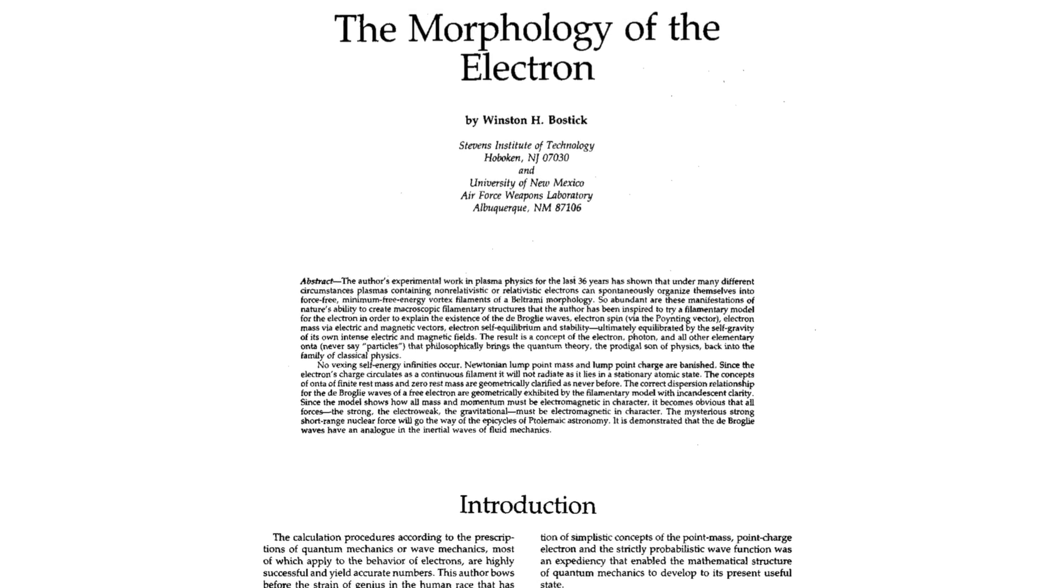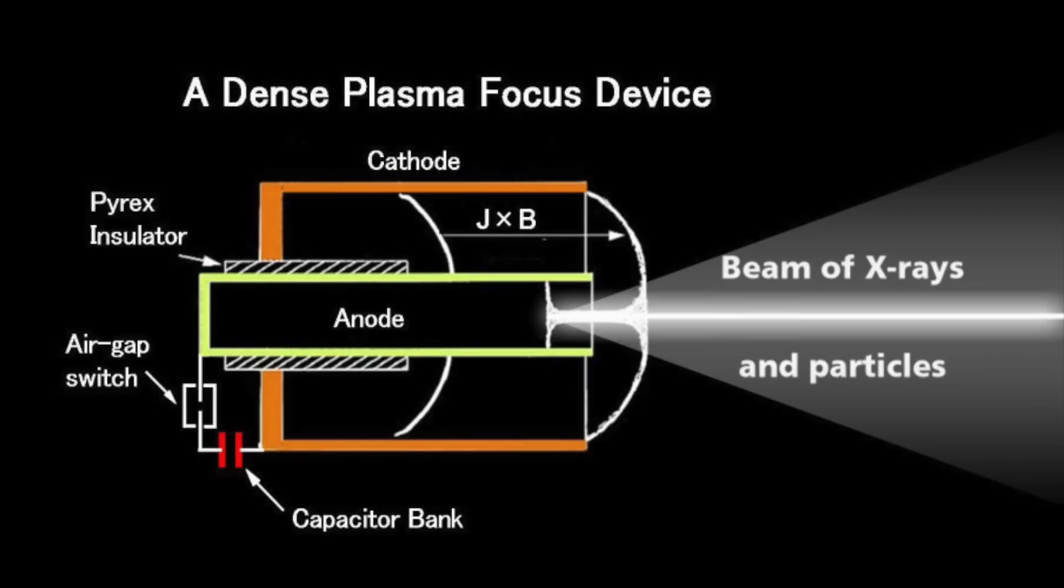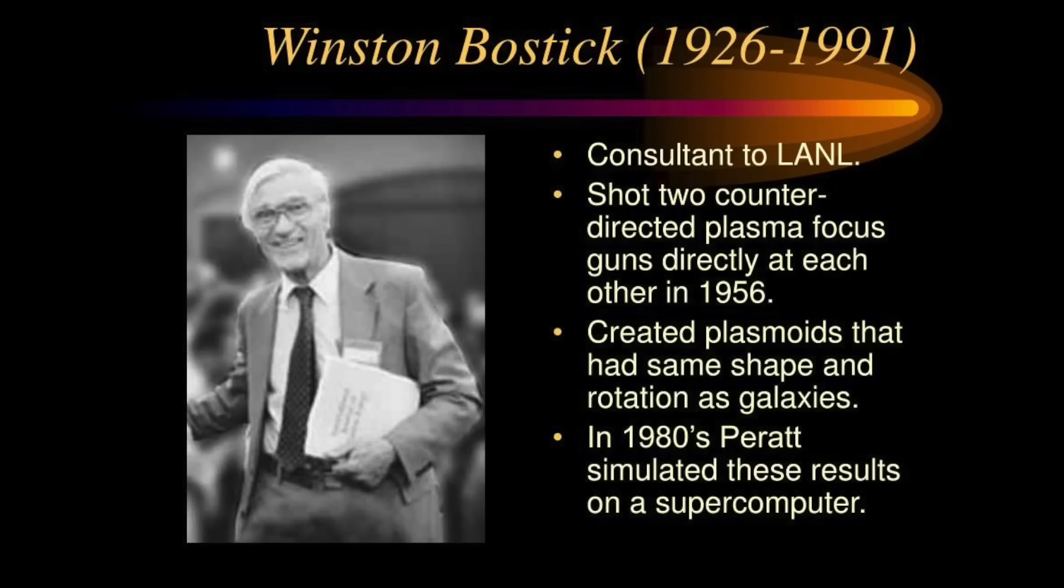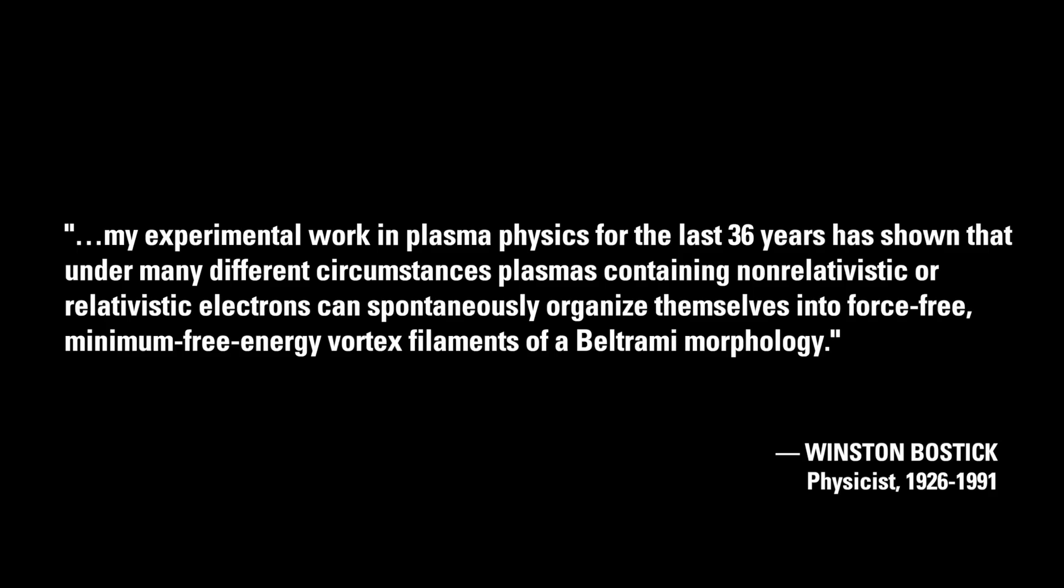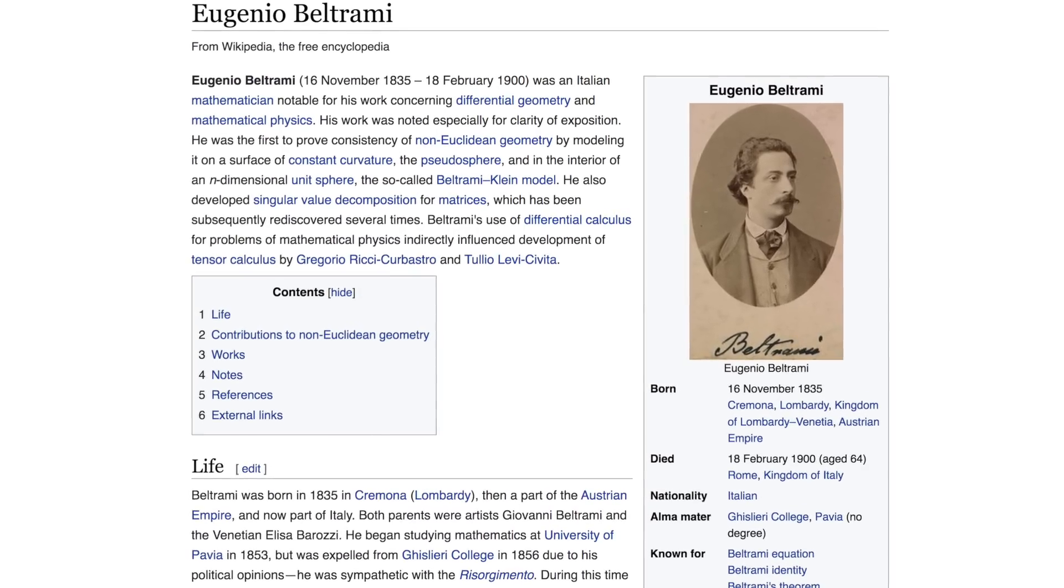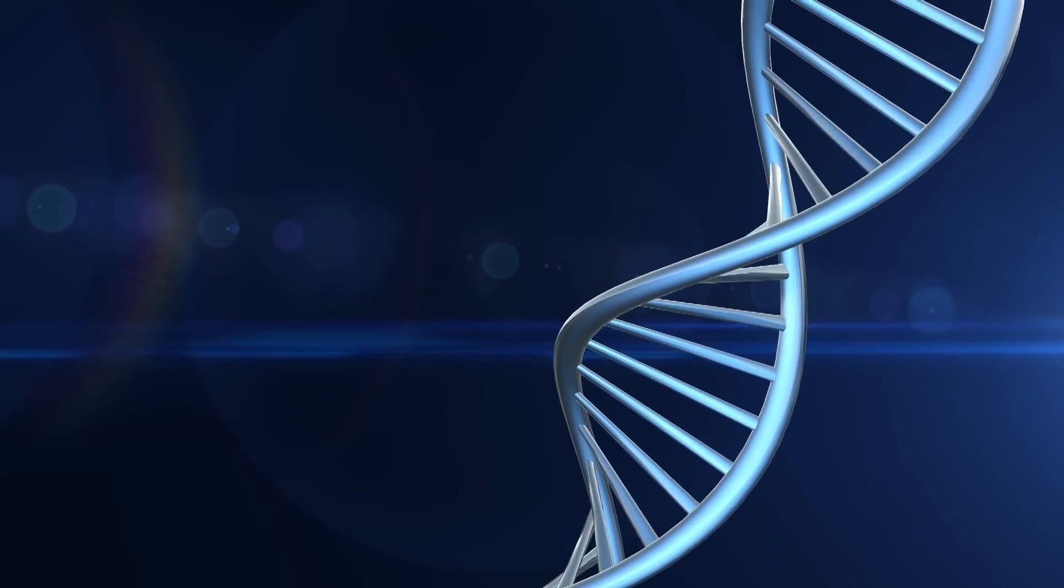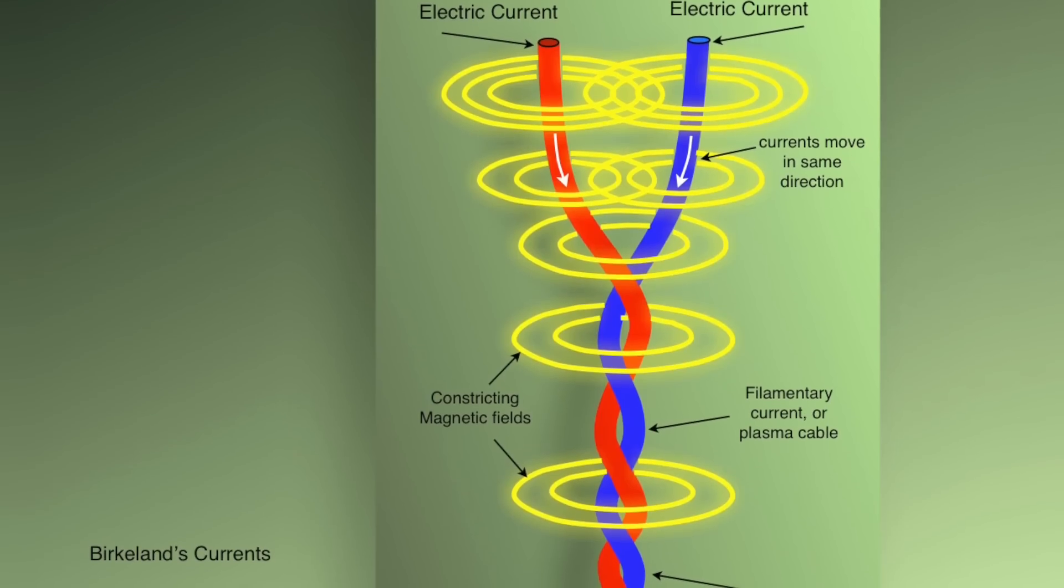Winston Bostick was one of the preeminent plasma physicists of the 20th century. He was the first scientist to conduct a systematic investigation of the physics of the dense plasma-focused device and the extraordinary plasma structures they produced, for which he coined the term plasmoid. Writing in 1986, Bostick stated, My experimental work in plasma physics for the last 36 years has shown that under many different circumstances, plasmas containing non-relativistic or relativistic electrons can spontaneously organize themselves into force-free, minimum free energy vortex filaments of a Beltrami morphology. Eugenio Beltrami was an 18th century Italian mathematician who developed a partial differential equation that could be used to mathematically describe the morphology of helically twisted filament pairs, like that in DNA, like that in Birkeland currents.